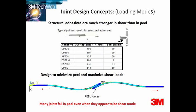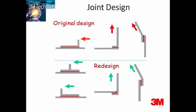Many joints fail in peel even when they appear to be in shear mode. This is especially true with flexible substrates or thin gauge metals. Ideally joints should be designed with easy bonding in mind. However, joints can also be redesigned, often with minimum impact on form, fit, and function. Three examples are shown here. The original design with the red arrows was poor design, because they emphasized either peel, cleavage, or a combination of the two.